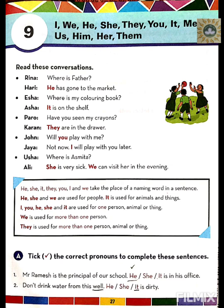And 'it' is used for animals and things. I, you, he, she, and it are used for one person, animal, or thing.